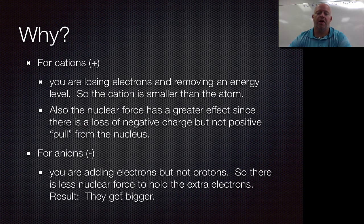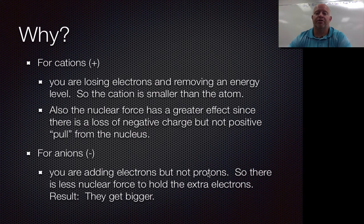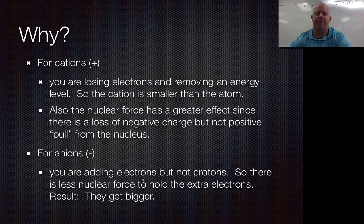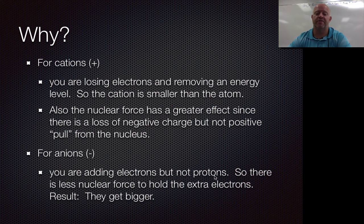For anions, you're doing the exact opposite — you're adding electrons but not protons. As a result, the protons are outnumbered: you have more electrons than protons, so the nucleus can't hold on as tight. Think of it like trying to keep kindergartners together — two or three is easy to corral, but five, six, or seven become harder and harder to keep in a group. The same idea applies here: the protons only have so much positive pull, and if you have more electrons than protons, those electrons get further away and the atom gets bigger.